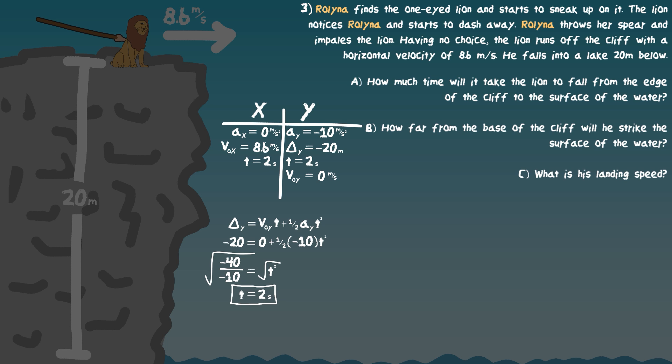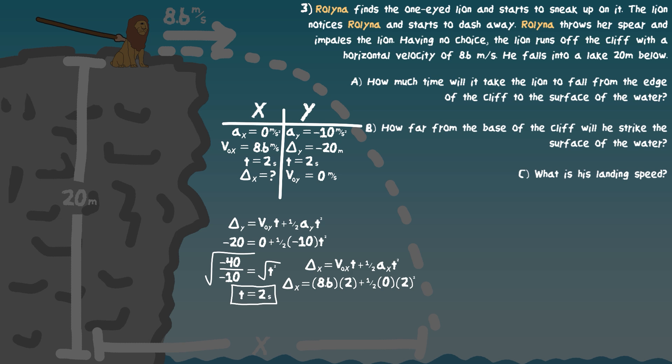Part B: how far from the base of the cliff will the lion strike the surface of the water? We're looking for displacement in X. Now that we have three pieces of information in X — acceleration, velocity (8.6 m/s), and time (2 s) — using displacement X equals V-initial-X times T plus one-half times A-X times T-squared: displacement equals 8.6 times 2 plus zero, giving 17.2 meters.